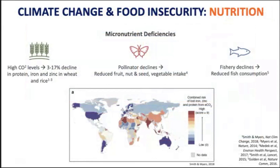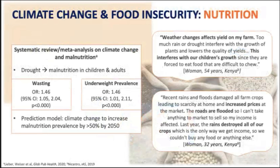Turning to impacts on nutrition: higher CO2 levels have been found to contribute to a 3 to 17 percent decline in the amount of protein, iron, and zinc in critical crops like wheat and rice. Climate change is also driving a rapid decline in the population of pollinators around the world, and a lot of our nutrients globally come from pollinated crops like fruits, nuts, and vegetables. About 1 billion people in the world rely on fish catch for their diet, but since 1996 fish catch has been falling, putting people at risk of zinc, iron, and vitamin A deficiencies.